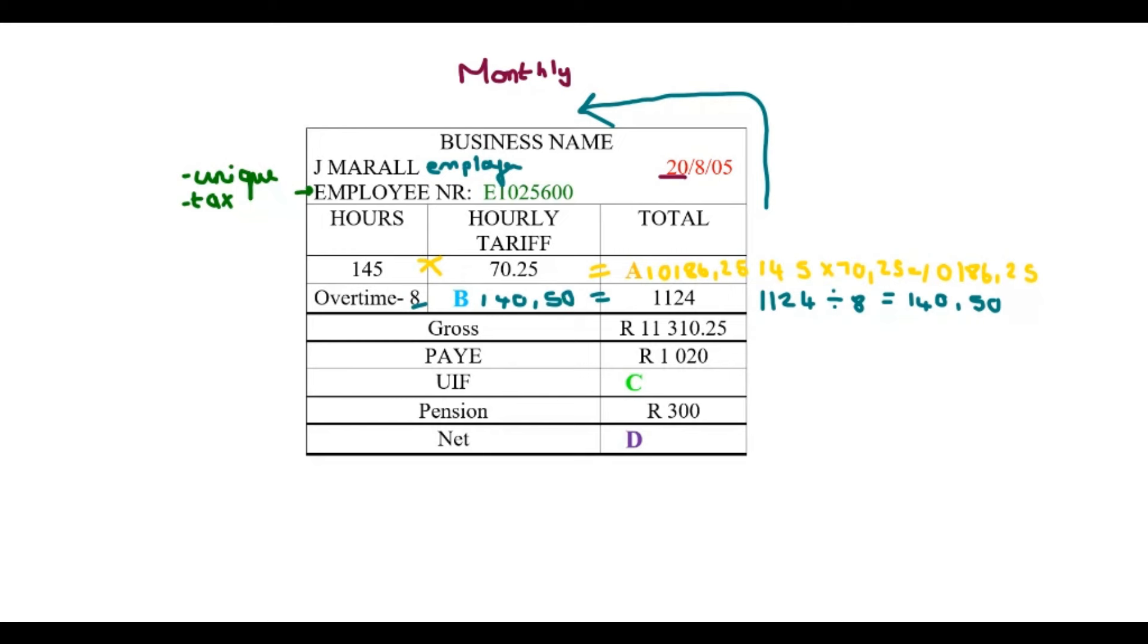And I want you to take note of something. The hourly tariff for the normal rate is 70 rand, 25 cents. For overtime, it's 140 rand and 50 cents. So this is exactly double. And sometimes for overtime, you will see that you get paid double the rate or simply 1.5 times your usual rate.